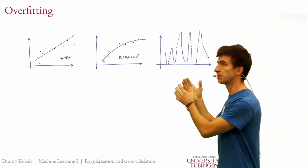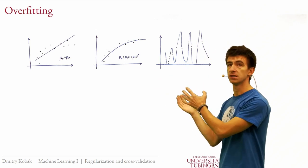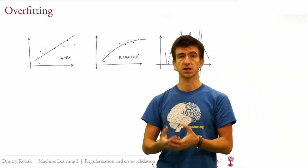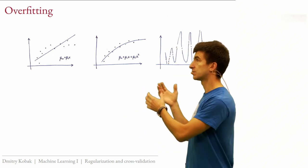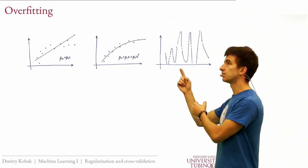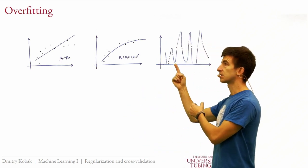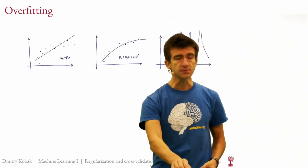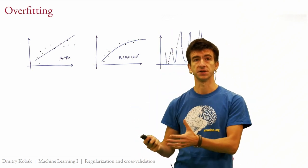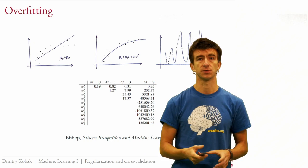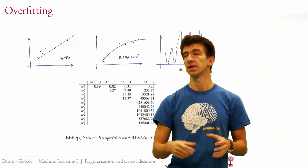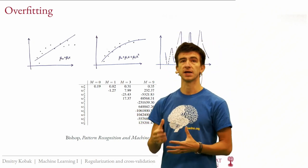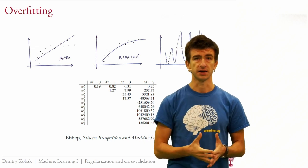The loss on the training data is zero, but we intuitively see that this is a really bad fit — if you're predicting something between the points, you're way off. This is overfitting, and it typically happens whenever your model is too flexible for the data you have.